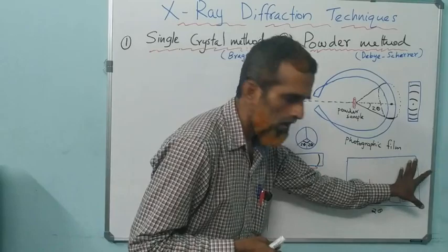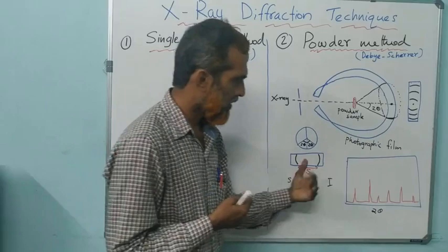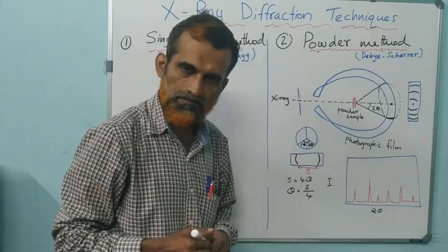Generally, the diffraction output or pattern is plotted as intensity versus 2-theta, and you get many peaks. The crux of this technique is to analyze these peaks to determine the crystal structure.